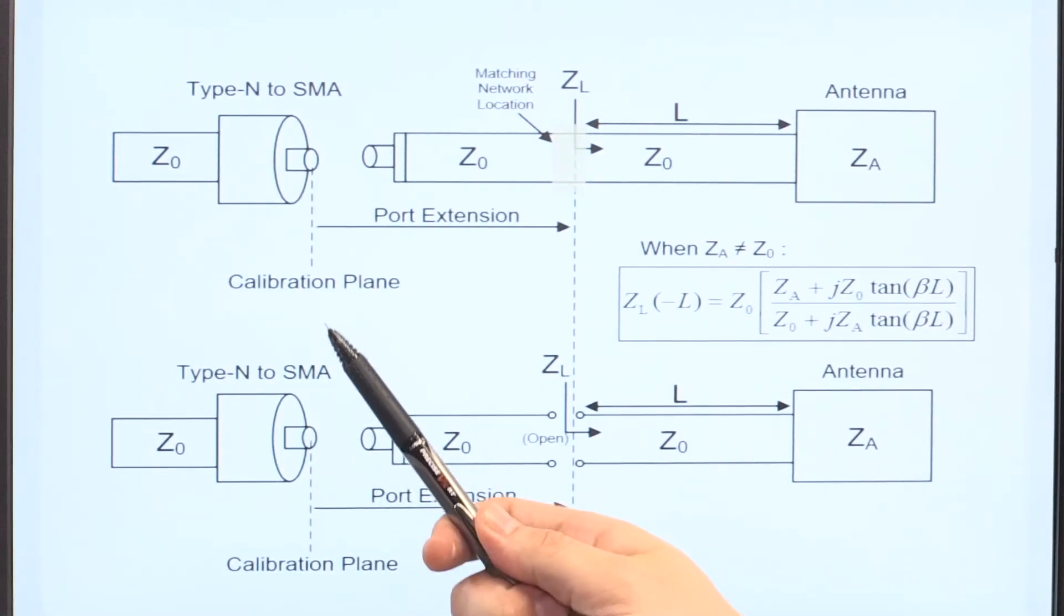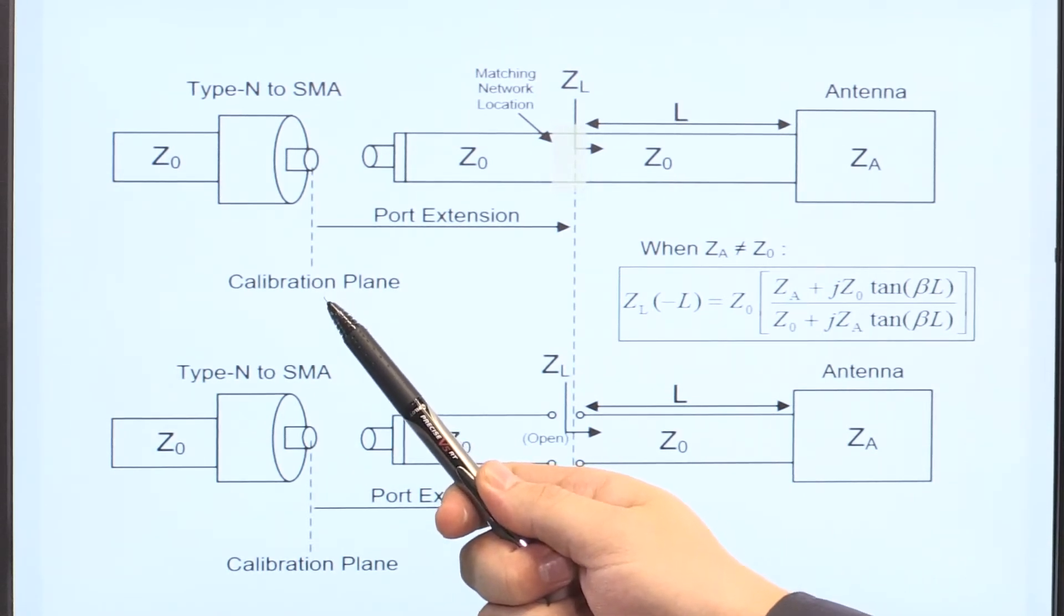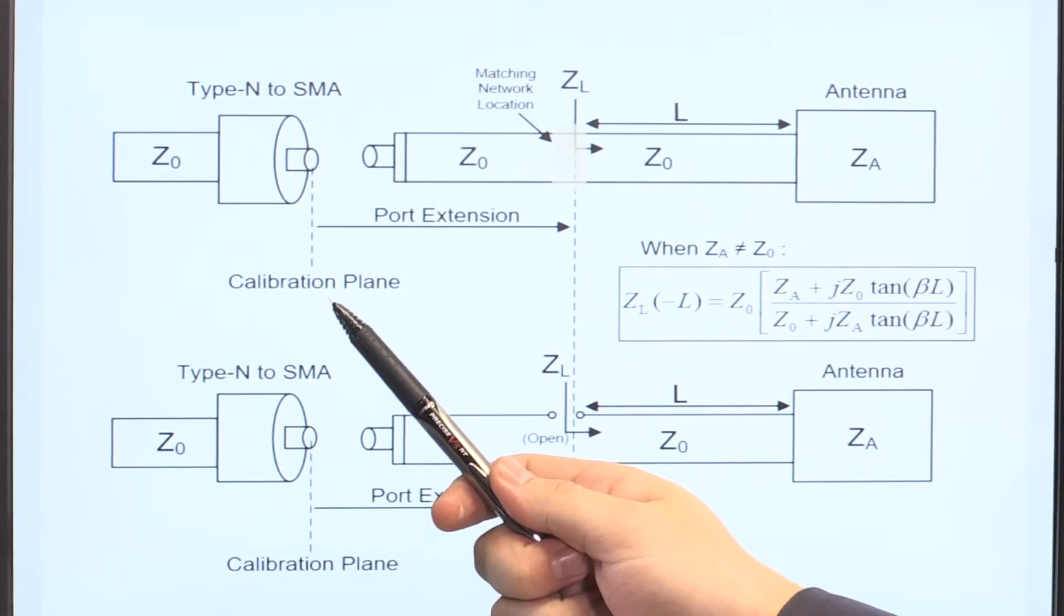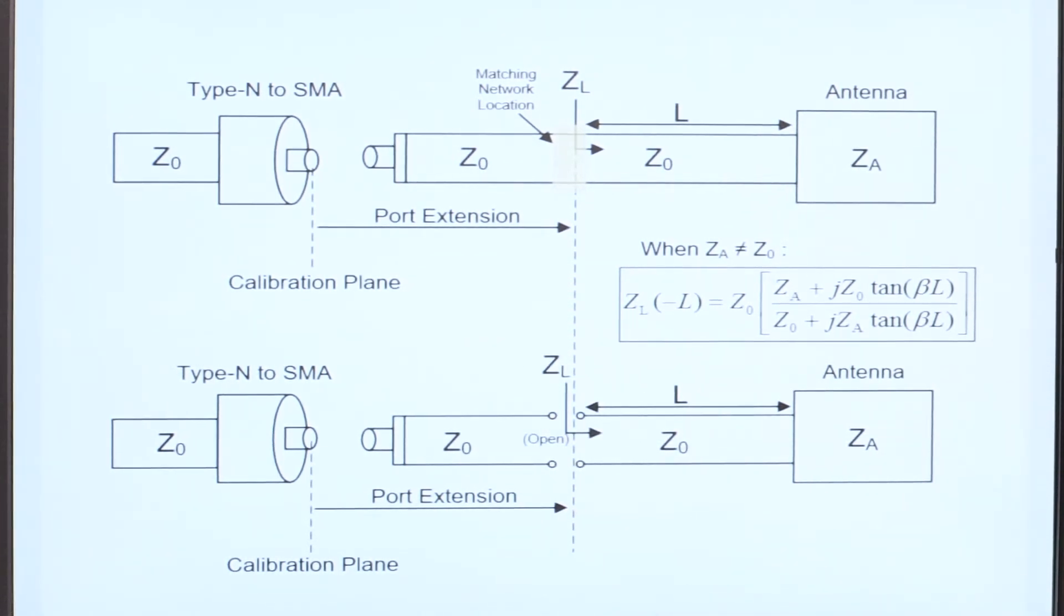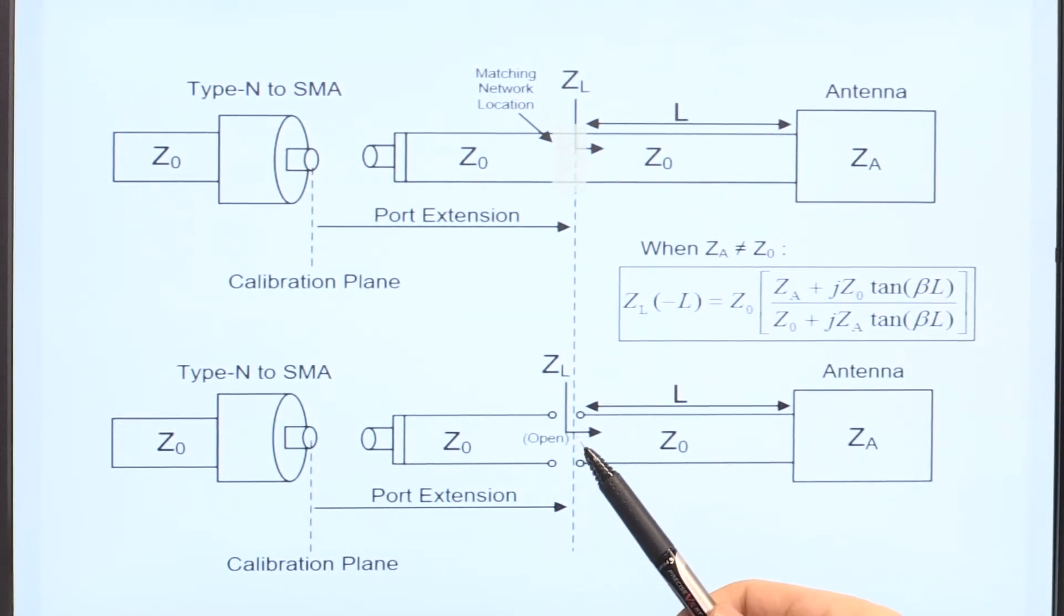Now that we've properly calibrated at the end of the type N to SMA connector, now we need to apply a port extension. And to do so, I've conveniently included an equivalent trace on my test board with an open located exactly where the matching network is to be placed. And I'll use this open on the Smith chart to indicate when I've applied the correct amount of port extension. One thing to note, on a real-world transceiver module, you can create an actual open by just removing the components that are already in place for the matching network, if it's already included.